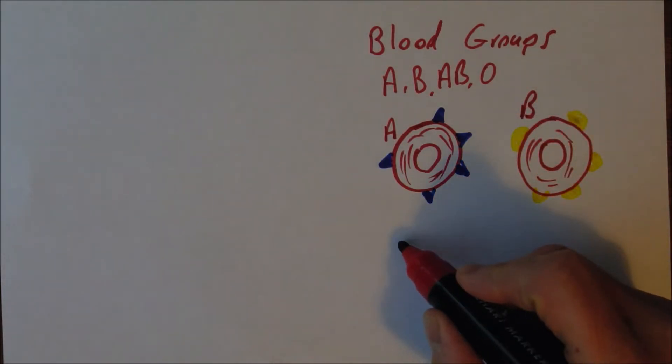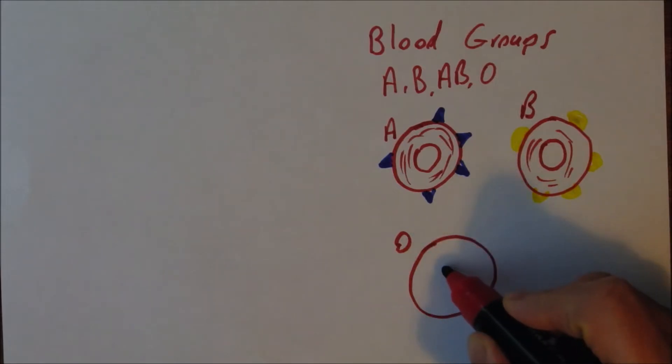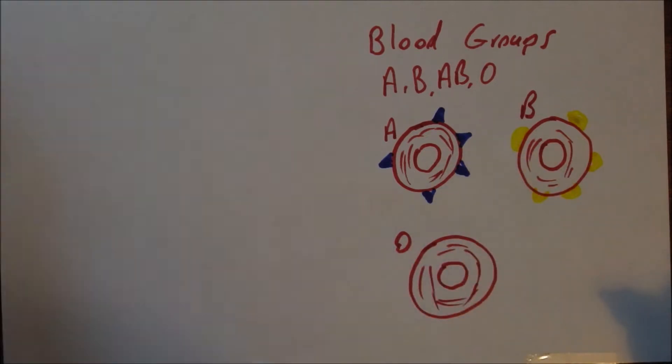Now blood group O is actually blood group zero. O is a corruption of zero. The cells look the same but there are no antigens on the surface of the cell.